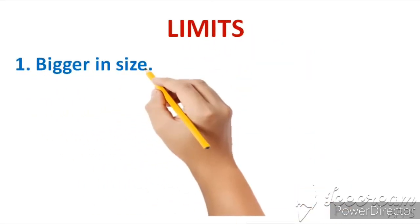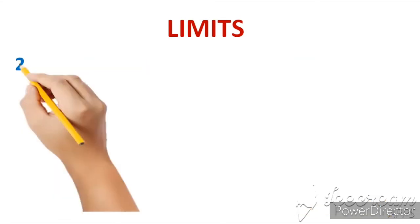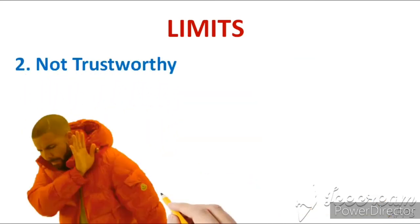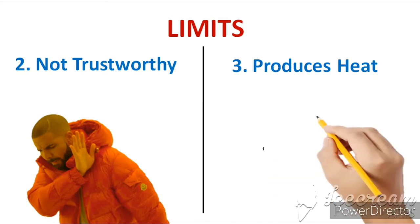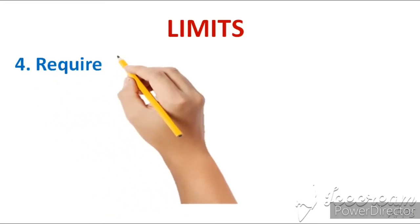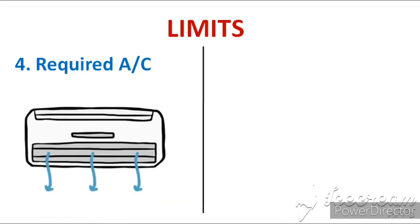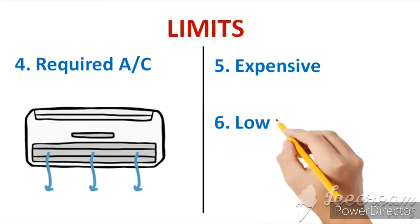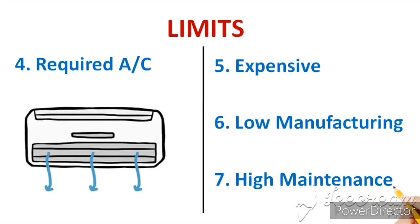Now let's see the limits of first generation computers. First, they were very big in size — so big that their setup required a total of 1800 square feet of room. Second, not trustworthy — they were not trustworthy at all because their output lacked accuracy. Third, they produced a very large amount of heat because a large amount of vacuum tubes were used, so AC was required. Fourth, required AC, which made them very expensive, and due to being expensive their manufacturing was also low. Their large size also made them difficult to maintain, so seventh is high maintenance.